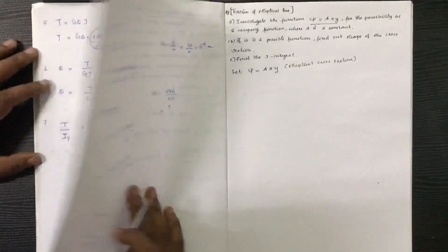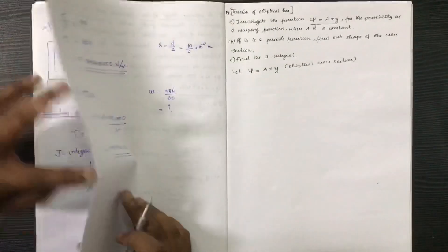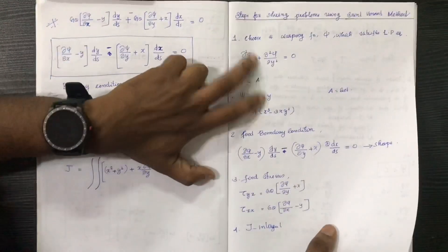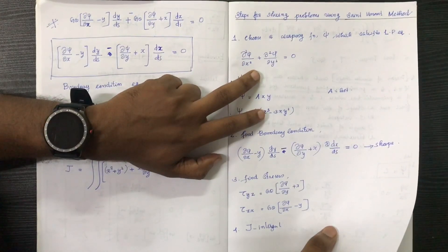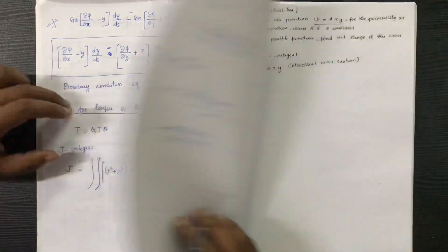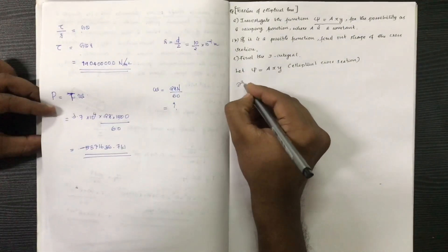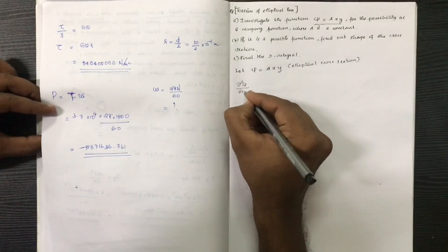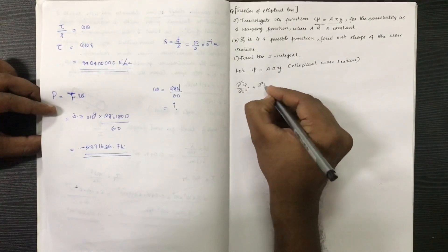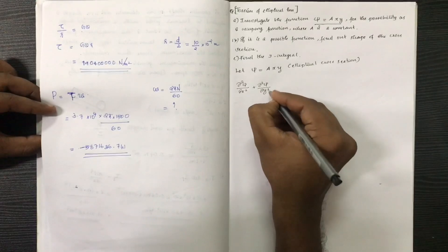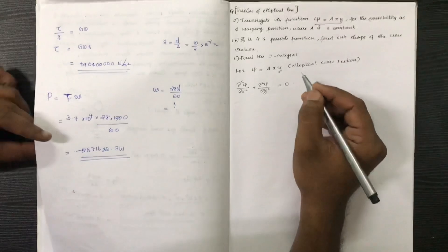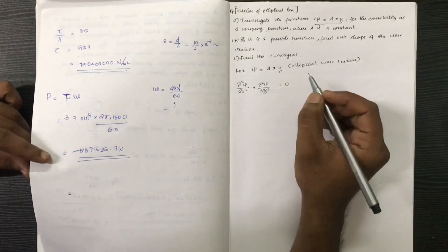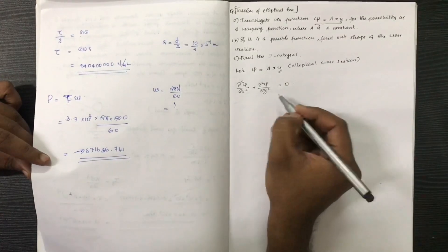First of all, we have to check whether it is a possible warping function by applying it and substituting it in the Laplace equation. If ψ is a possible warping function, it should satisfy the Laplace equation.